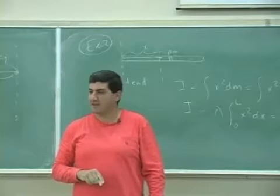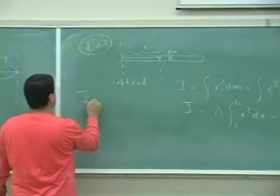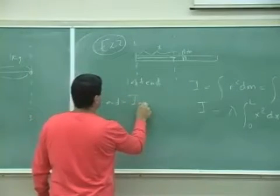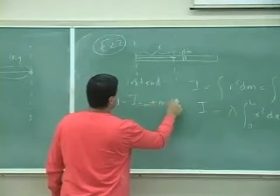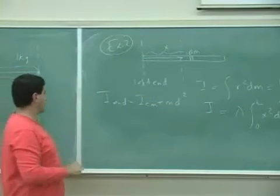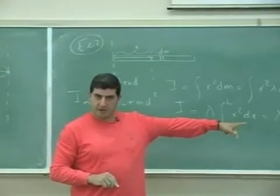I don't want to have to reintegrate it, so I'll say I about the end is equal to I about the center of mass plus md squared. All right. So I about the end we just found out is one third ml squared.